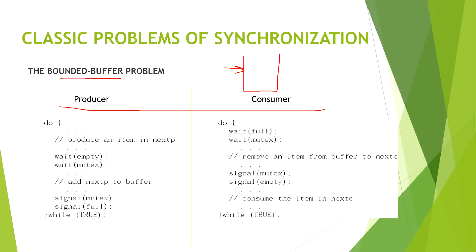Now we will solve that bounded buffer problem with the help of semaphores. It will be solved by three semaphores. We will deploy three semaphores for the producer-consumer problem. One is mutex. After that we will check whether the box or container — where we have to keep the produced goods and from where the consumer is taking the goods — is empty or not. If it is empty then we will produce and keep the good, but if it is not empty we will wait. After that we will check whether the container is full or not, and this full semaphore will be checked in the consumer.